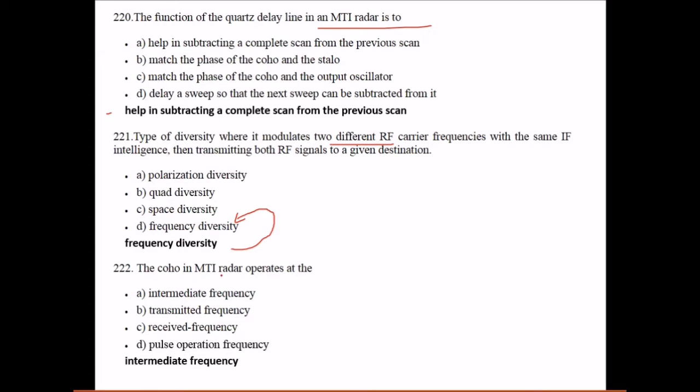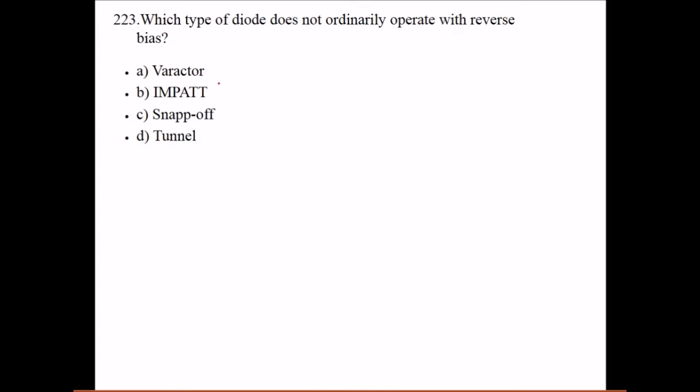The COHO in MTI radar operates at the intermediate frequency. Now which type of diode does not ordinarily operate with reverse bias? It is tunnel. Tunnel type of diode does not ordinarily operate with reverse bias.